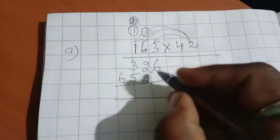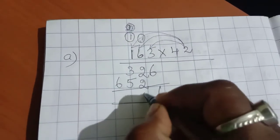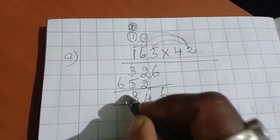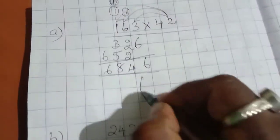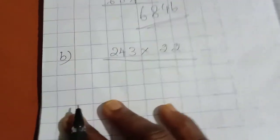Now we are going to add it. Six, two plus two is four, five plus three is eight, six. So now we got the answer is six thousand eight hundred and forty-six. The same way we will do another sum also.